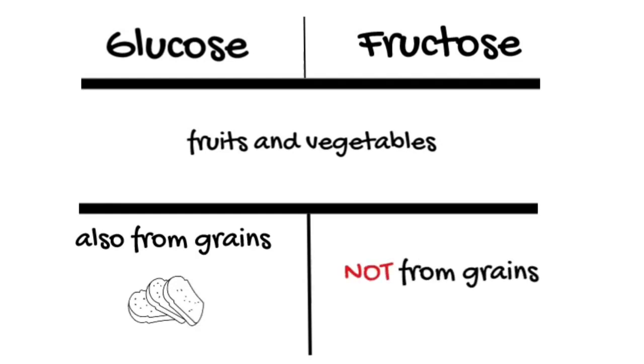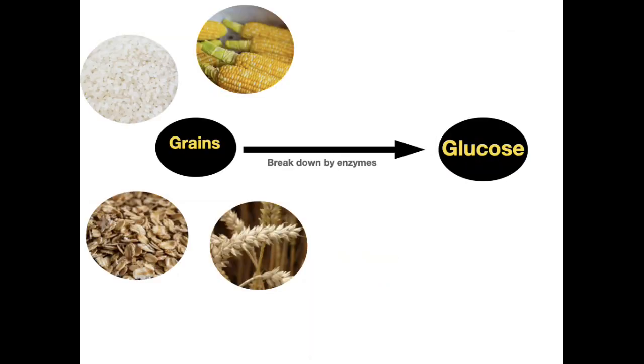Fructose is not found in grains — this is the first difference between them. Grains including wheat, barley, rice, corn, and oats contain complex carbohydrates that are broken down by enzymes in the body into simple sugars including glucose. When you eat an apple, for example, it provides both glucose and fructose. But when you eat bread, pasta, or rice, your body breaks down those carbohydrates into glucose — not fructose — which is then absorbed into your bloodstream to raise blood sugar for energy.